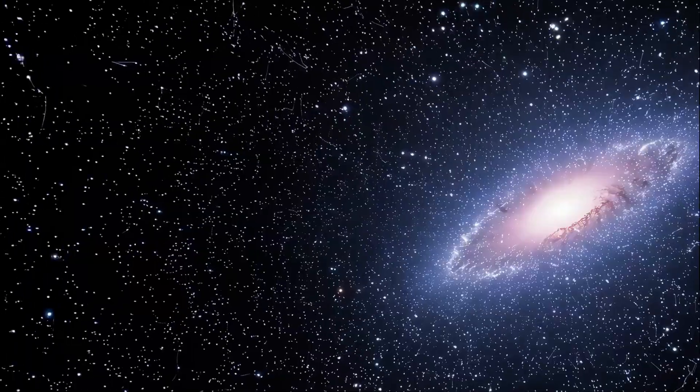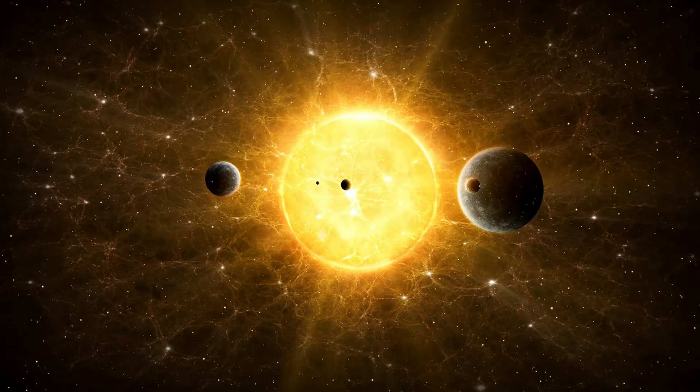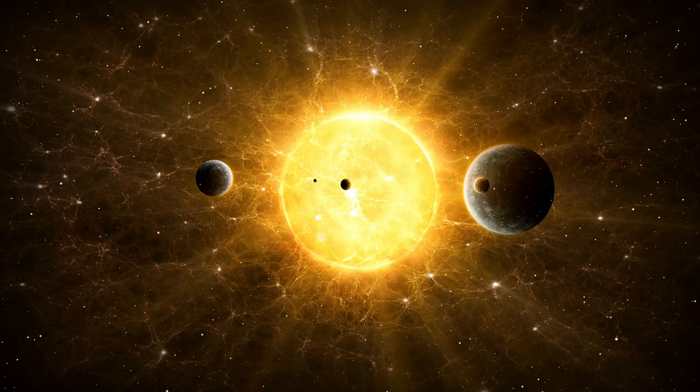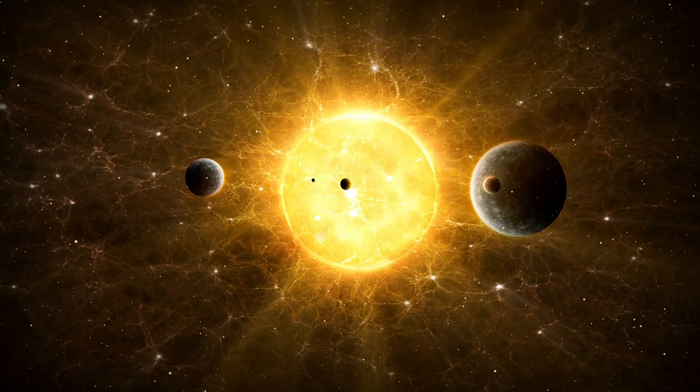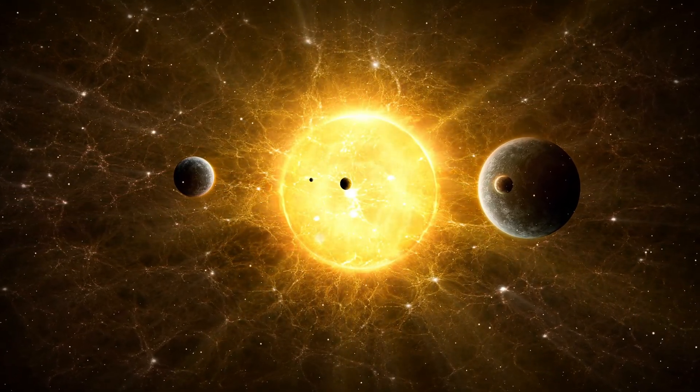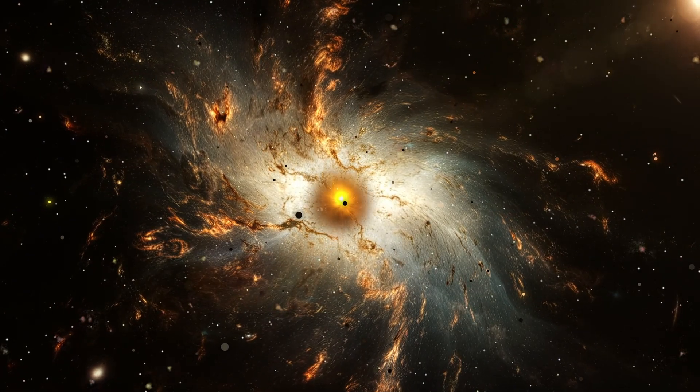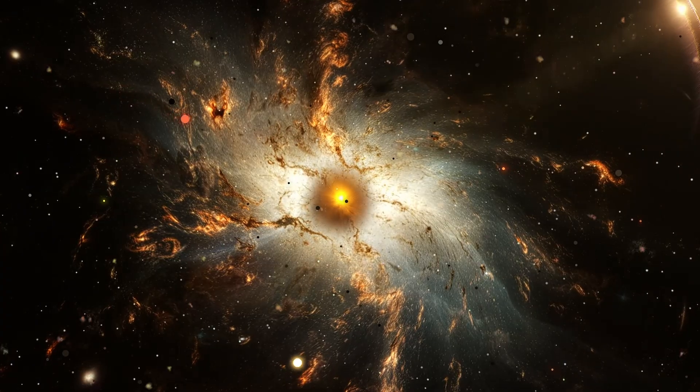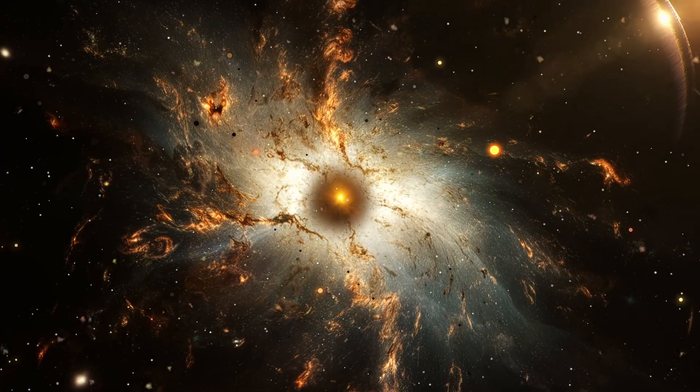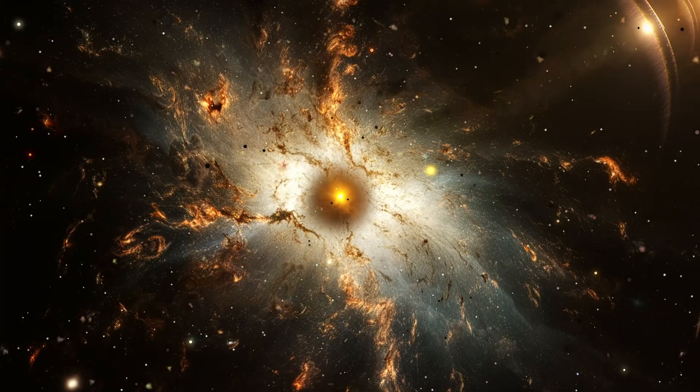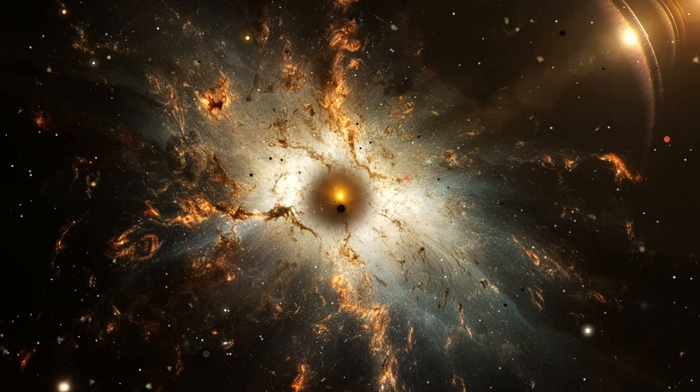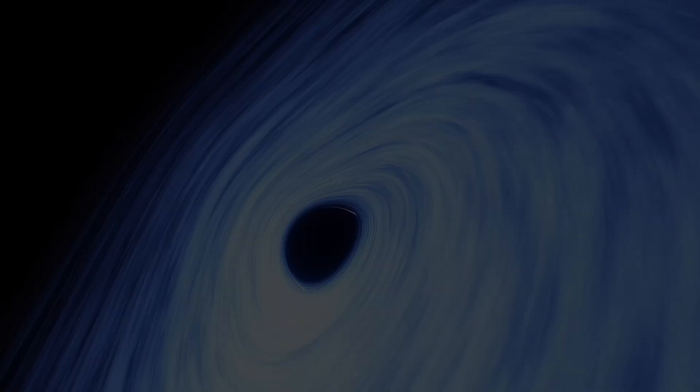Some black holes weigh billions of suns. Their shadows could swallow our entire solar system without leaving a ripple. These giants do not simply sit still. They feed. They pull in gas clouds the size of solar systems. They shred stars like paper. They merge with other black holes in silent, invisible collisions that ripple through space. And as they consume, they grow.